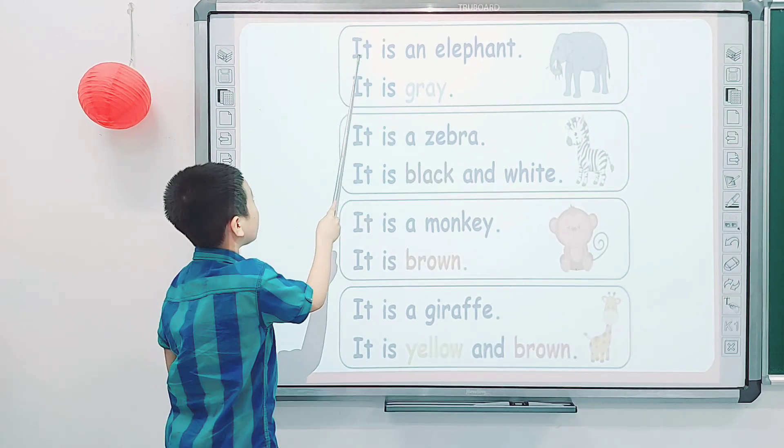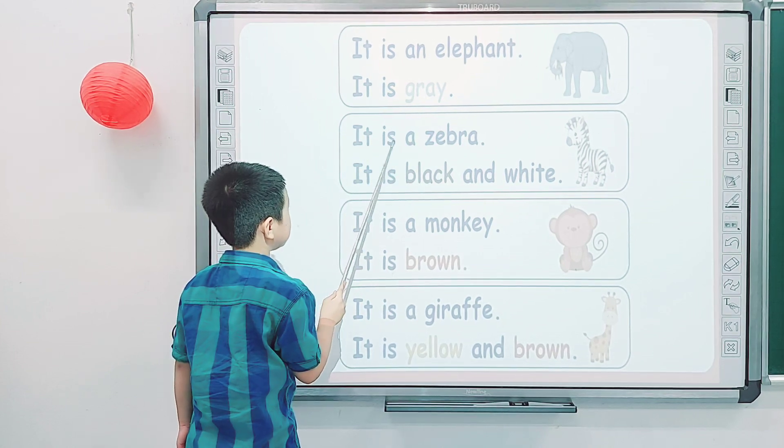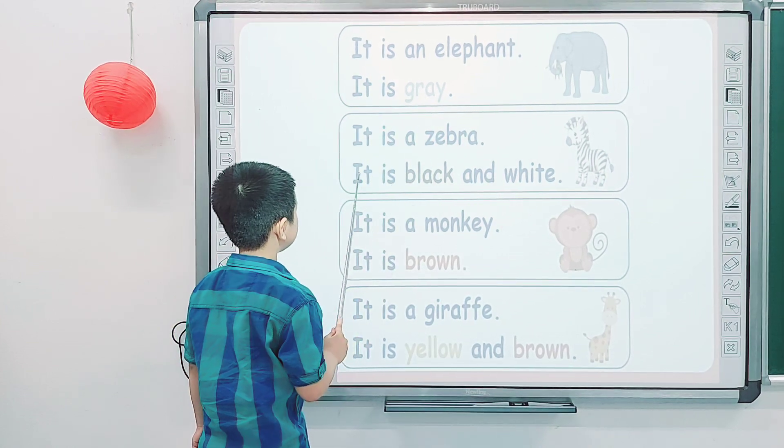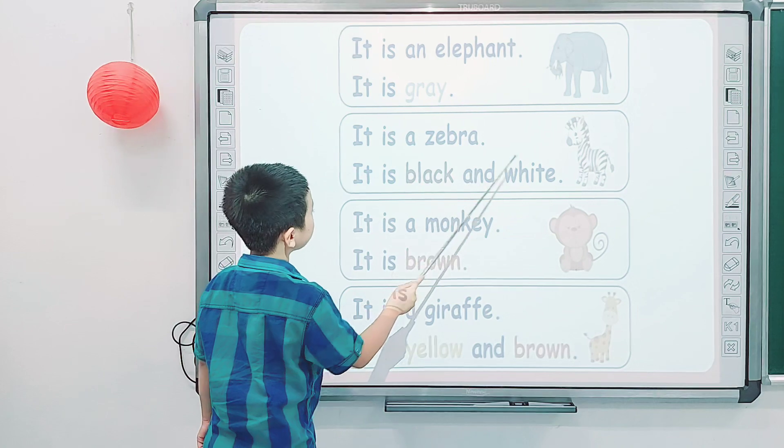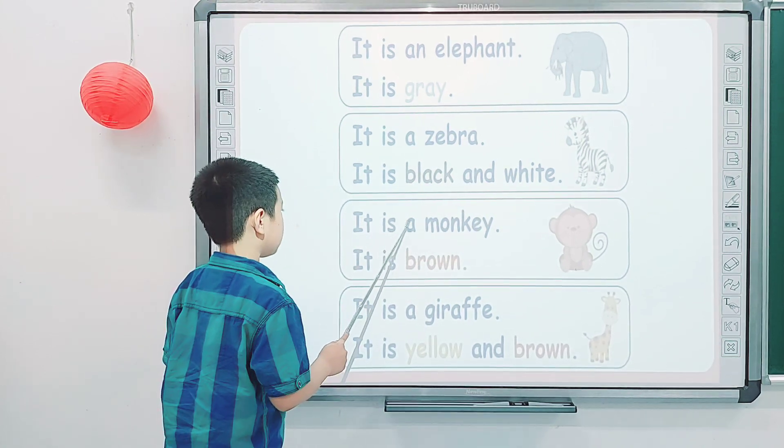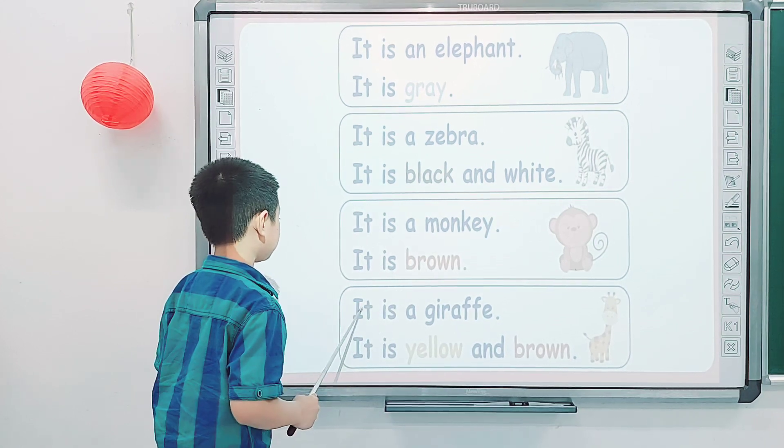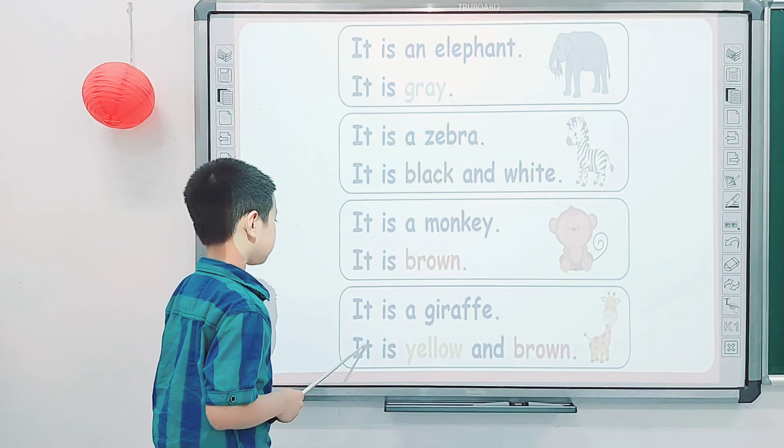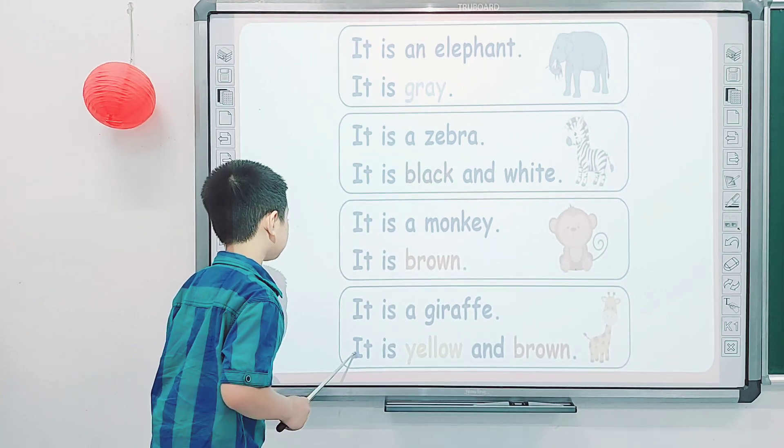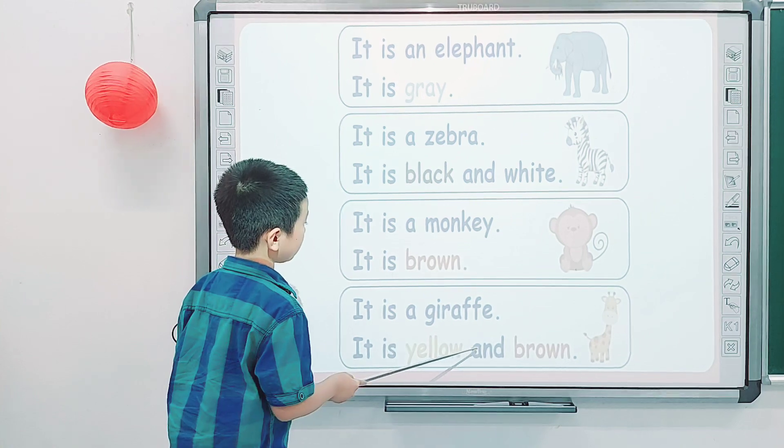It is an elephant. It is grey. It is a zebra. It is black and white. It is a monkey. It is brown. It is a giraffe. It is yellow and brown.